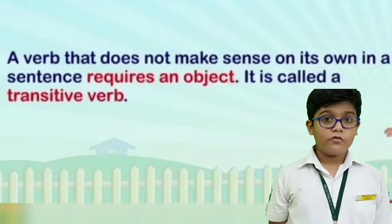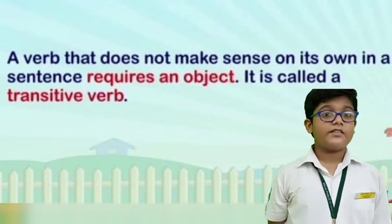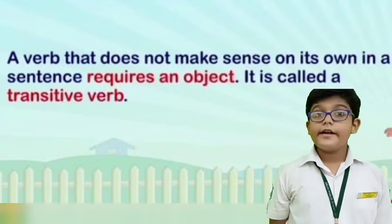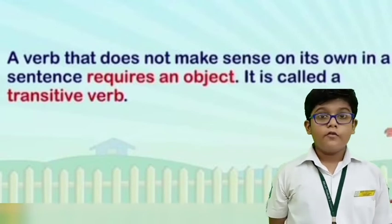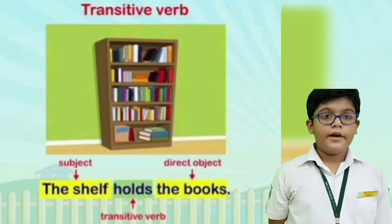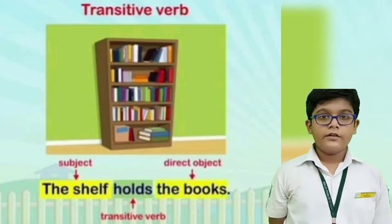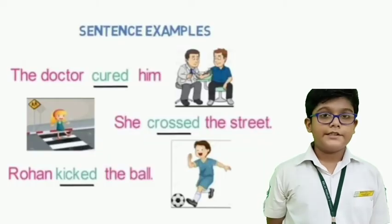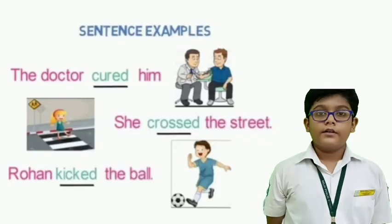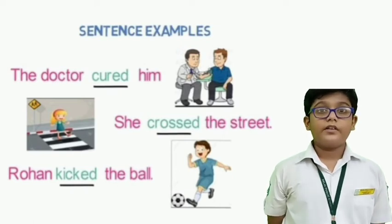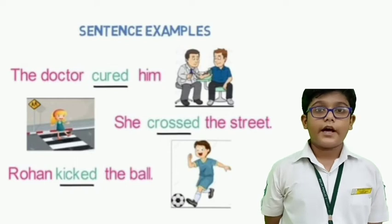Transitive verb: a verb that does not make complete sense on its own in a sentence and requires an object is called a transitive verb. For example, 'The shelf holds the book.' Here, the shelf is the subject, holds is the transitive verb, and book is the direct object. So it is a transitive verb performing an action. Another example: 'The doctor cured him.' Here, the doctor is the subject, cured is the action, and him is the direct object.